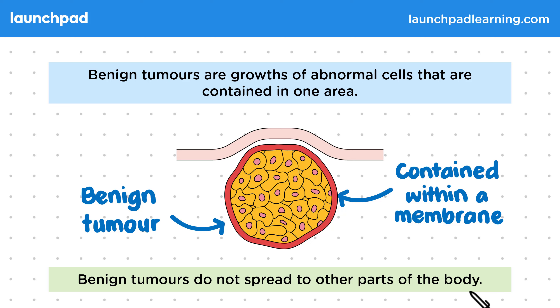Benign tumours do not spread to other parts of the body. Although these tumours are not referred to as cancerous and do not spread, they can grow very large and can be life threatening if they grow to cause pressure on an organ.